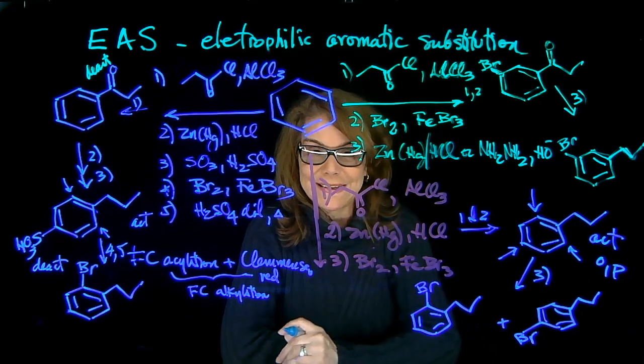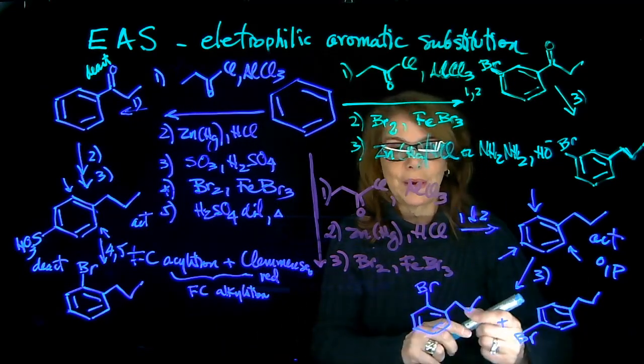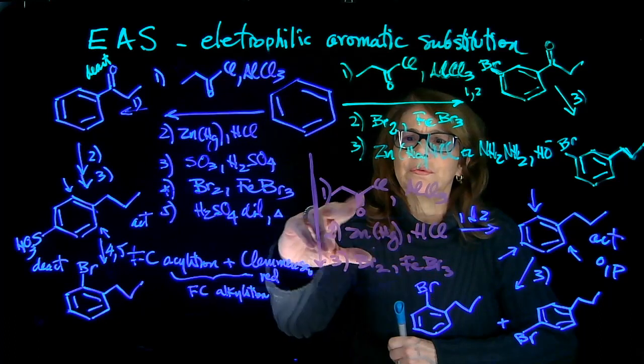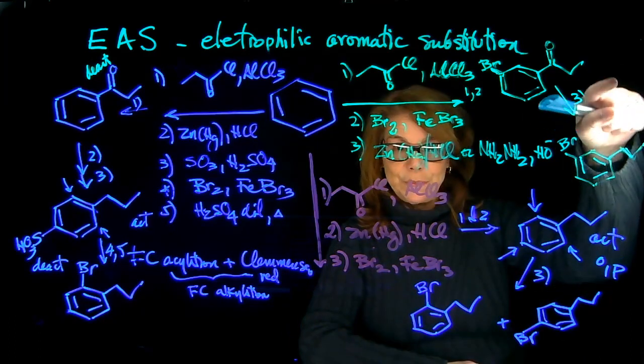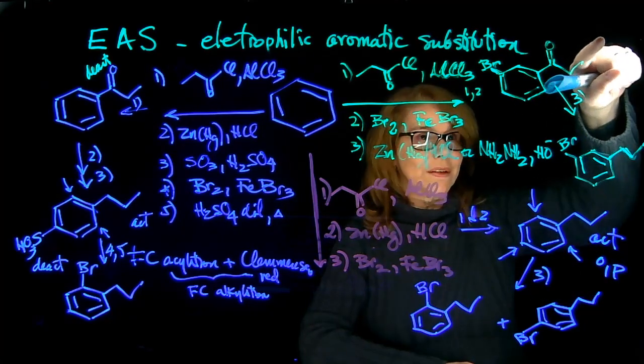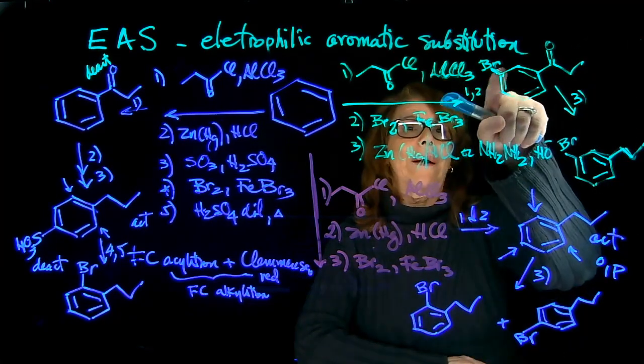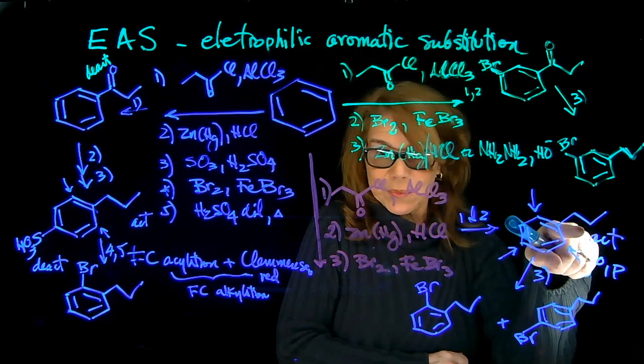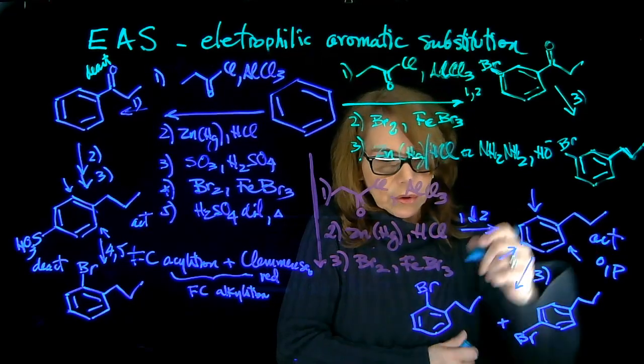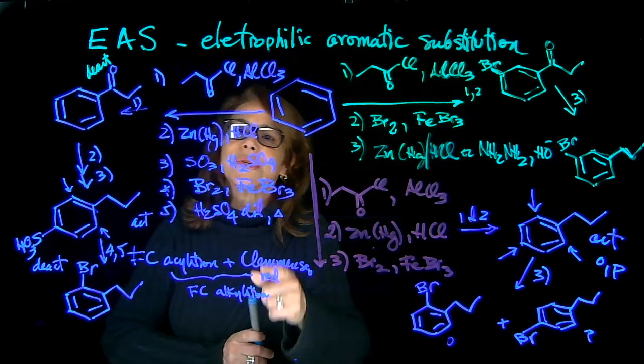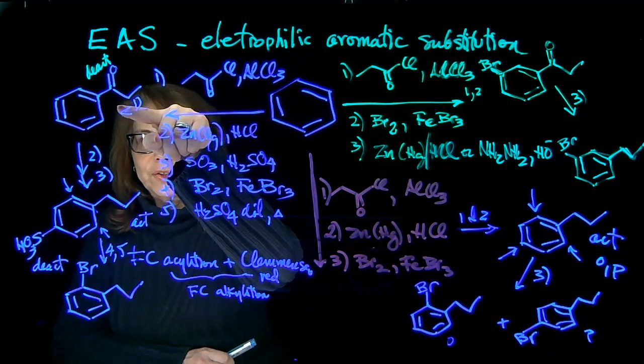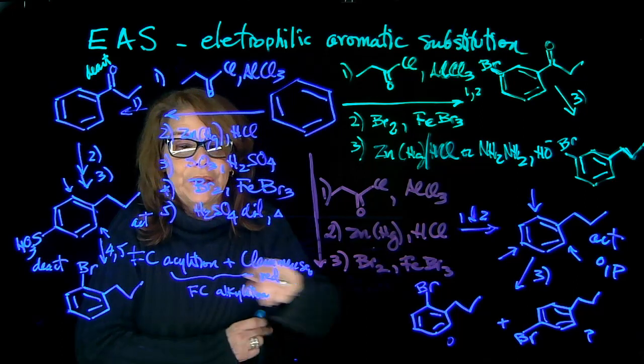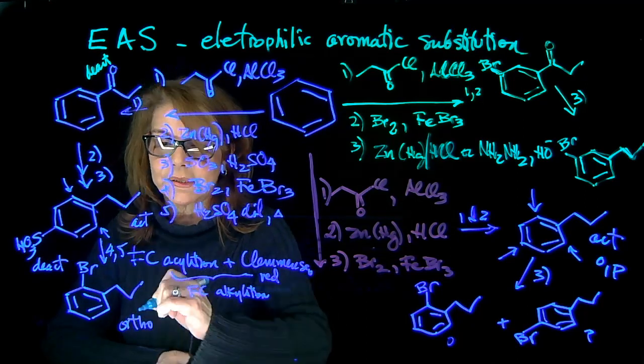So again, this was an example to show you how you get different products by using, changing the order in which you do the reaction. Here you simply swap these two. So here you got the meta, because if you do the bromination directly, this group is deactivating, so it's going to go the bromination meta. Whereas if you do the reduction first, this group is activating, so you have the ortho and the para products. But if you choose to, here is acylation, Friedel-Craft reduction. If you protect the position in para doing a sulfonation, then you get a much clearer reaction, and you have only the ortho substituted.